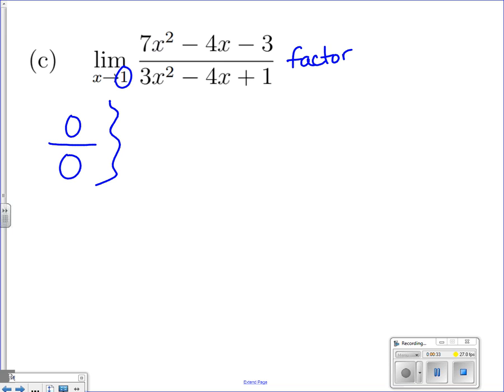we end up with the limit as x approaches 1 of 7x times x. And what we want to do is multiply two things that multiply to give us 3 that add up to negative 4, but this 7 is also playing a role.